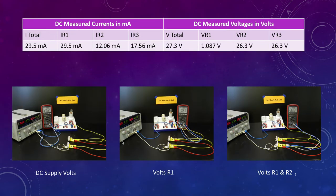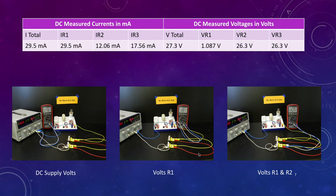I then repeated the process but switched my multimeter to volts mode and measured the voltage around the circuit. We got about 27.3 volts across the circuit, about 1.087 volts across R1, and then across R2 and R3 — because they're in parallel — we got 26.3 volts. Those are our three sets of readings for the DC supply.